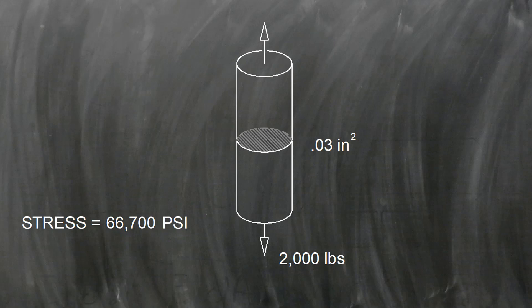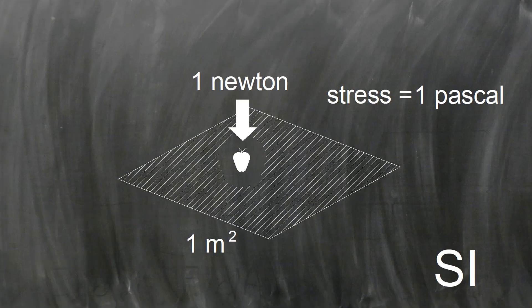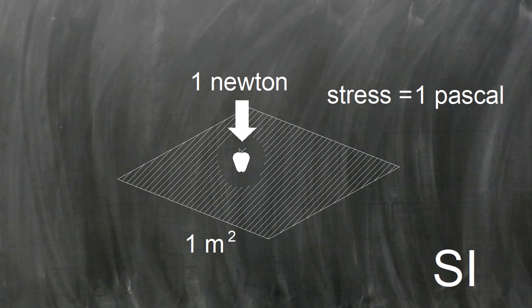For large values of stress, you may hear people use the unit KSI. A KIP is short for a kilopound or 1,000 pounds, so 1 KSI is 1,000 PSI. The SI unit of stress is the Pascal. A Pascal is 1 newton per square meter.